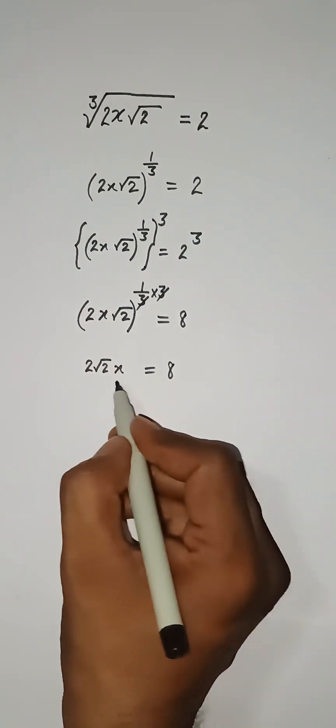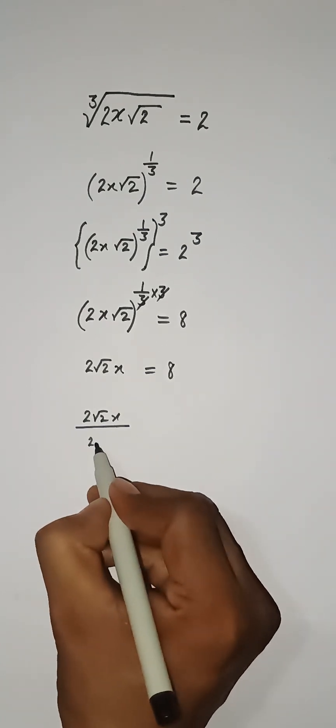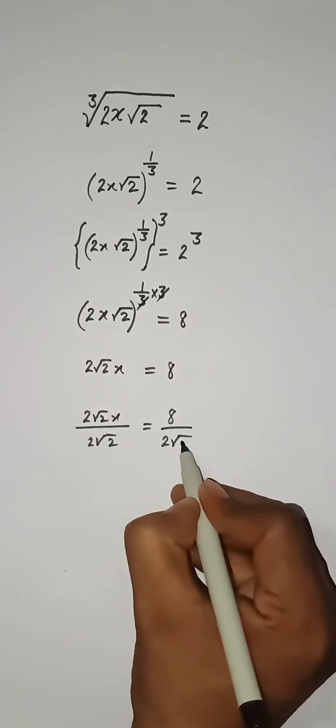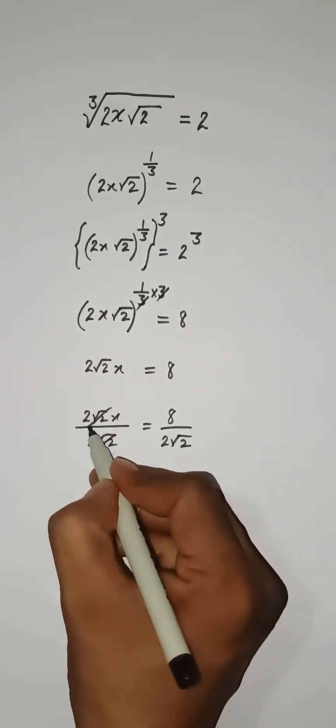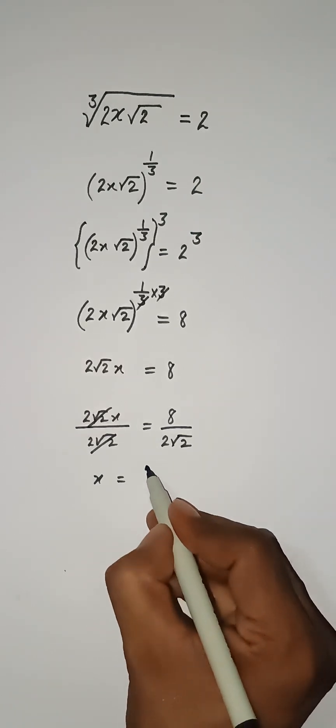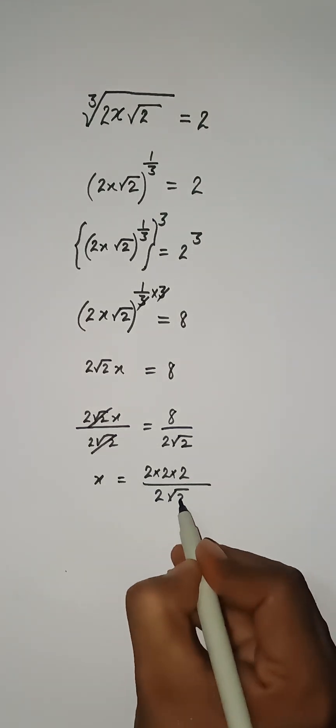We need to get the value for x. So both sides I am dividing it by 2 root 2. So here 2 root 2, this one cancels. We have x and 8 can be written as 2 multiply 2 multiply 2 divided by 2 root under 2.